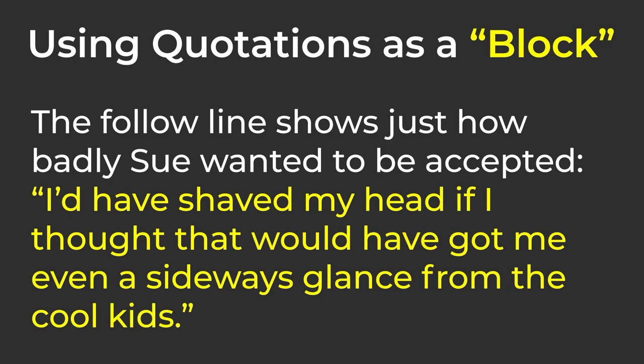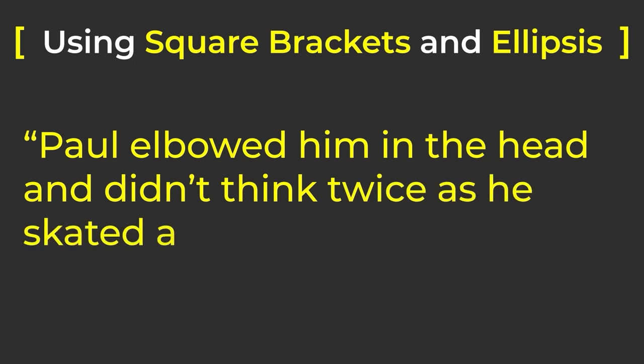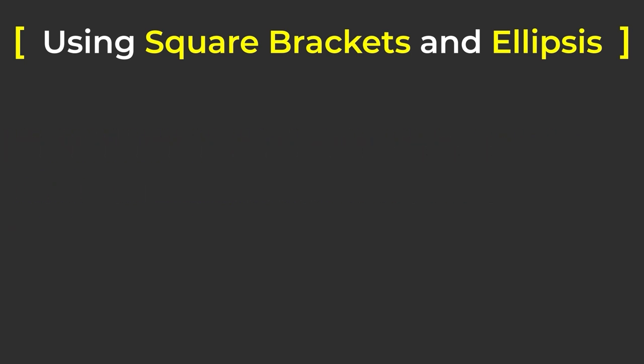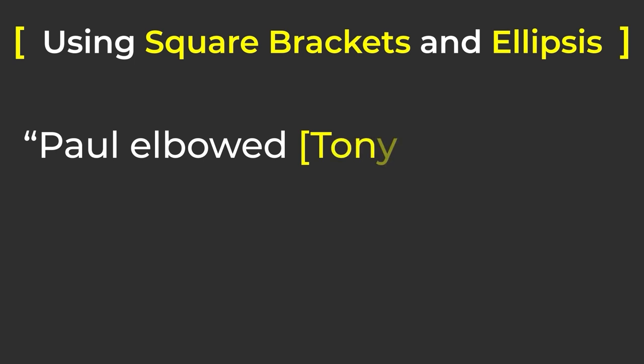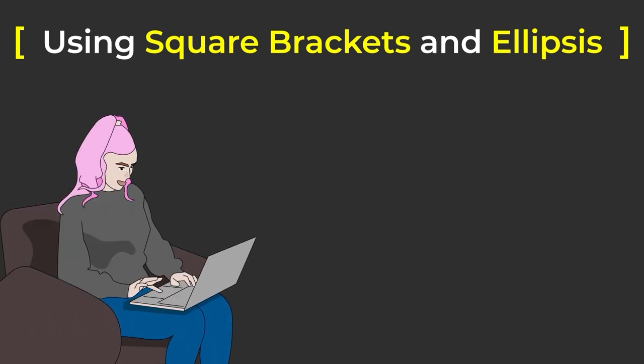Remember about going with the flow? Sometimes, in order to make a line flow smoothly, you need to make some changes or leave some things out. That's when we use square brackets and ellipses. If we need to change something in the quotation, we can put the changes in square brackets. For example, the original line says: "Paul elbowed him in the head and didn't think twice as he skated away." But the reader doesn't know the other character's name, so we add it inside square brackets: "Paul elbowed [Tony] in the head and didn't think twice."